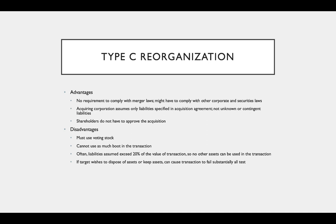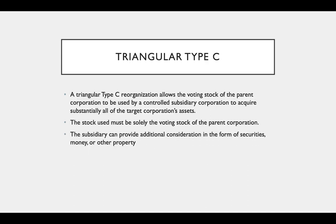If the target wishes to dispose of or keep assets, it can cause the transaction to fail the substantially all test. There is also a triangular Type C, just like there was a triangular Type A. A triangular Type C reorg allows the voting stock of the parent corporation to be used by a controlled subsidiary corporation to acquire substantially all of the target corporation's assets. The stock used must be solely the voting stock of the parent, and the subsidiary can provide additional consideration in the form of securities, money, or other property.